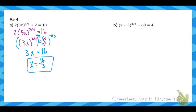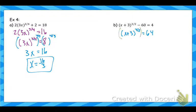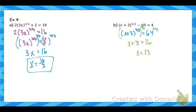Pause the video and try part b on your own if you feel comfortable. On part b, start by adding 60, then raise both sides to the reciprocal exponent — the 2/3 power. The cube root of 64 is 4, and 4 squared is 16, so x plus 3 equals 16, giving x equals 13.